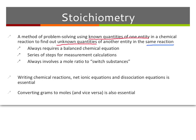What we need, always, is a balanced chemical reaction. We need that balanced chemical reaction because we're always going to use a mole ratio to move from our known to our unknown.